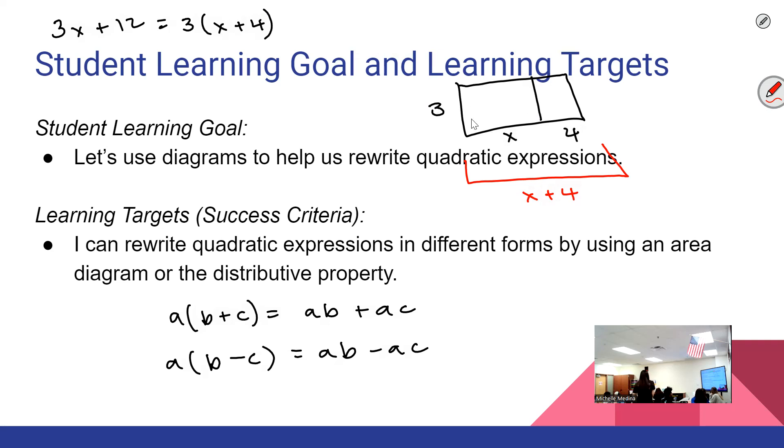So like, how do you find the area of a rectangle? Length times width, so if we're trying to find the area of this smaller rectangle, what's three times x? And then of this, I said smaller maybe, what about this smaller rectangle, three times four?